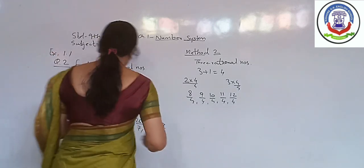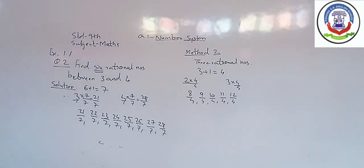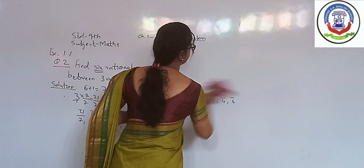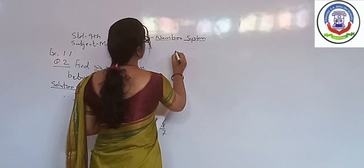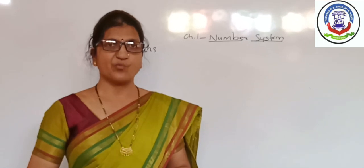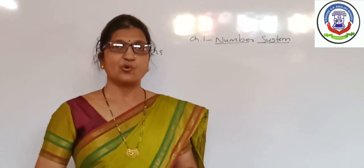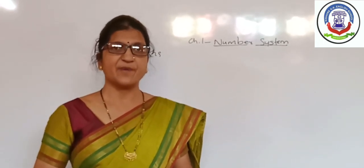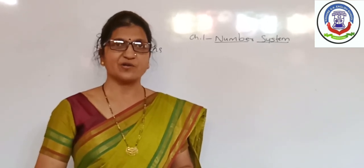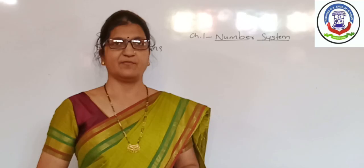These are the 6 rational numbers between the two numbers which are 3 and 4. Now we will discuss question 3: Find 5 rational numbers between 3 by 5 and 4 by 5. Dear students, we have solved the sums of Exercise 1.1, Question number 2. Tomorrow we will start with question number 3 of Exercise 1.1. Till then, revise all questions which we have done today.